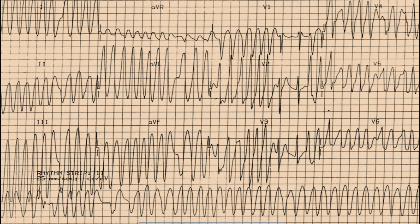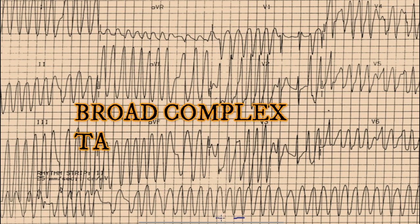Starting with the discussion on this ECG, the most prominent thing you can note is a very fast heart rate. You can see that the heart rate is very fast, with the rate approaching around 300 at some instances. Also, the QRS complex here is very broad — it is more than three small squares — so we can say that this is a broad complex tachycardia.